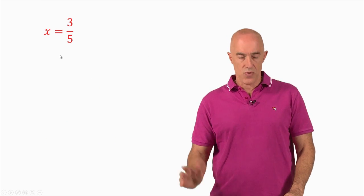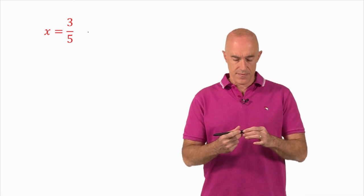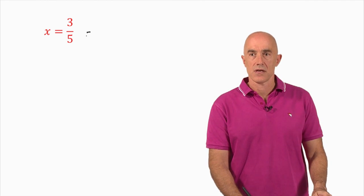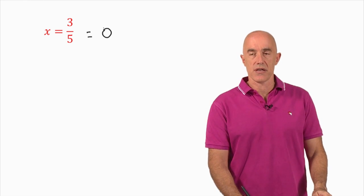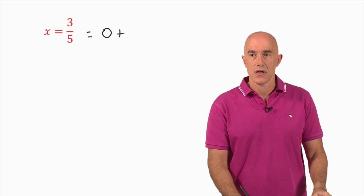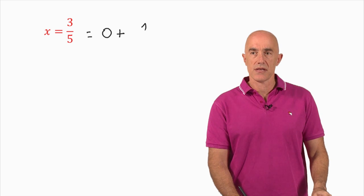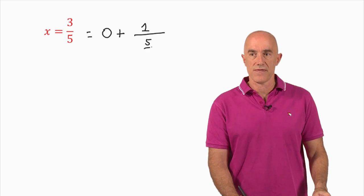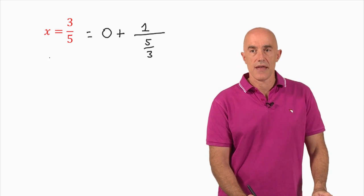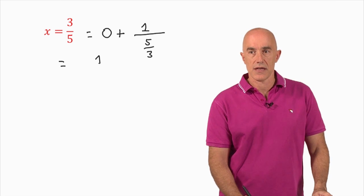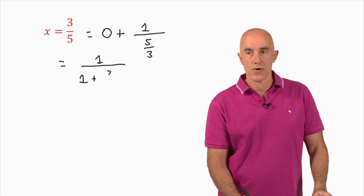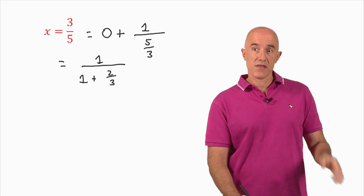I think the easiest way to see how a continued fraction works is to do an example. So let's start with a rational number: three-fifths. How do we write this as a continued fraction? The integer part is zero, so a₀ is zero. Then how do we put three-fifths into the proper form? The trick is to write it as one over something — and that something is the reciprocal of three-fifths, which is five-thirds. Then we pull out the integer part of five-thirds: five-thirds is one plus two-thirds. And then we repeat the process for two-thirds.